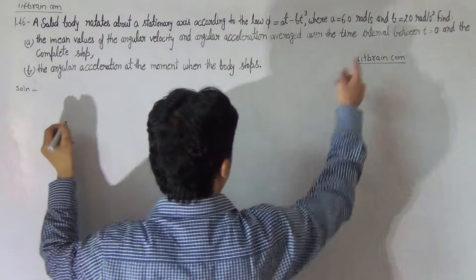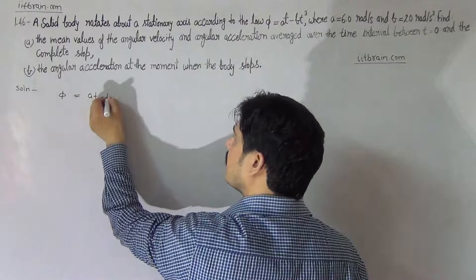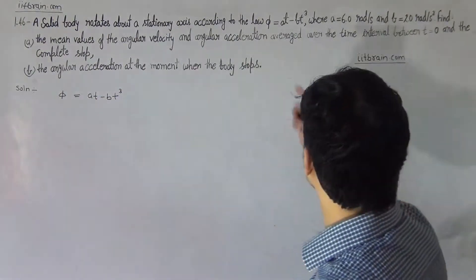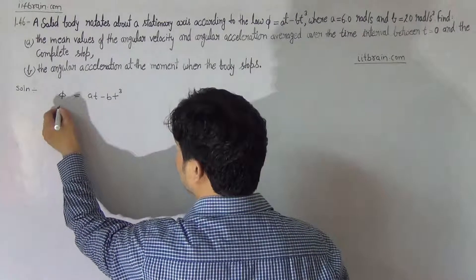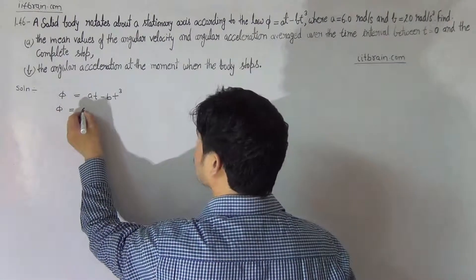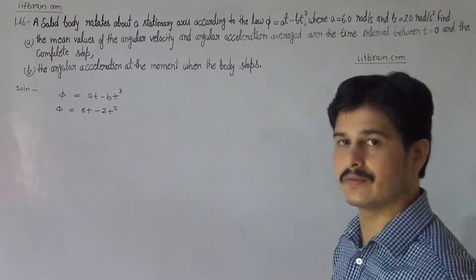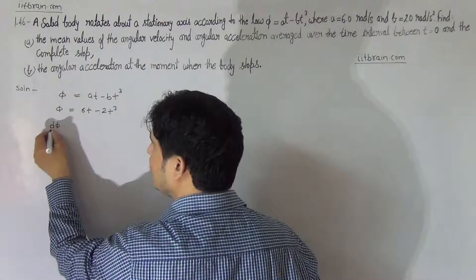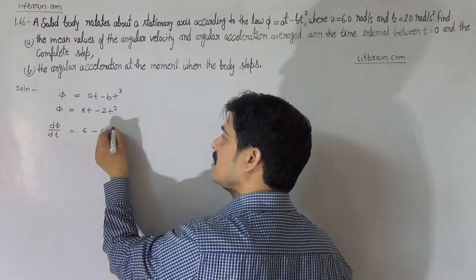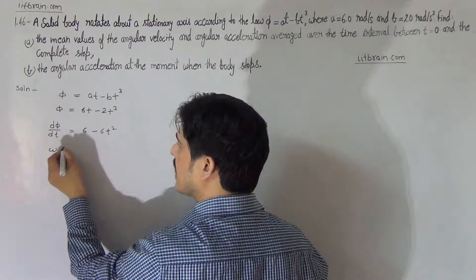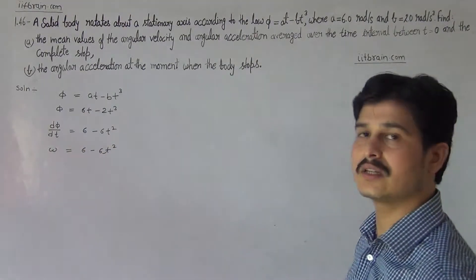According to the given problem, the angle rotated by the body is given as φ = AT - BT³. Substituting the values A = 6 and B = 2, we get φ = 6T - 2T³. Differentiating this, we get dφ/dt = 6 - 6T². This dφ/dt is the angular velocity, so the angular velocity of the body is ω = 6 - 6T².